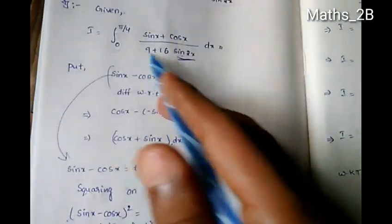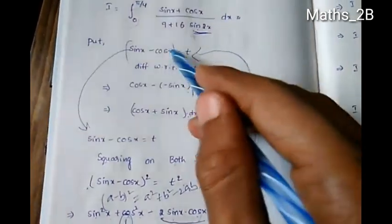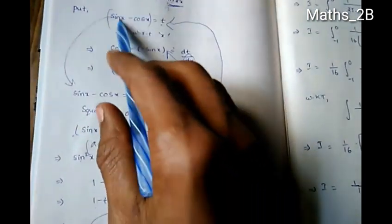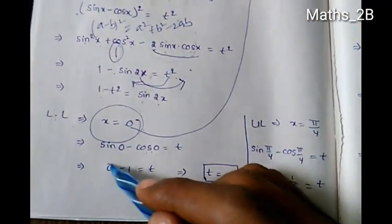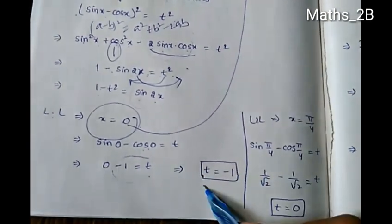Now we change the limits. When x = 0, sin 0 - cos 0 = 0 - 1 = -1, so the lower limit becomes t = -1.